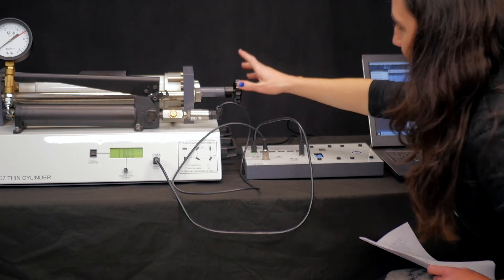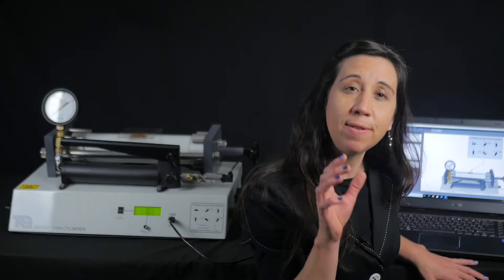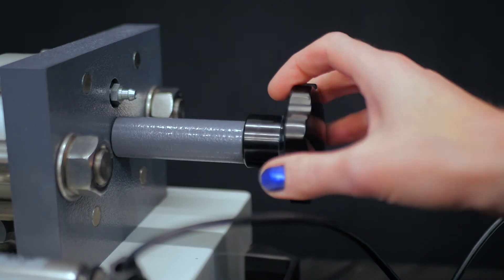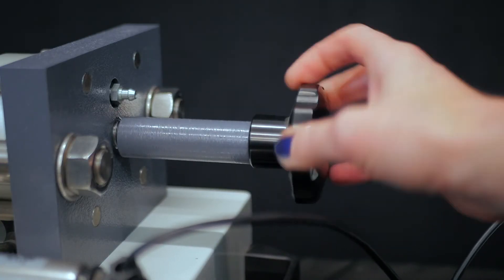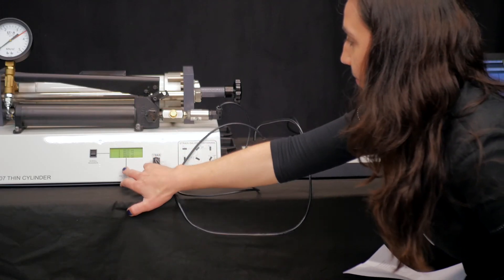On the VDAS screen, if you're using this, make sure you've selected this experiment and then ensure that you've also specified that you're using the open ends experiment condition. At this point, we close the cylinder. This prevents the oil pumped out of the hand pump bleeding back in. Press this button to zero the strain gauge display readings.